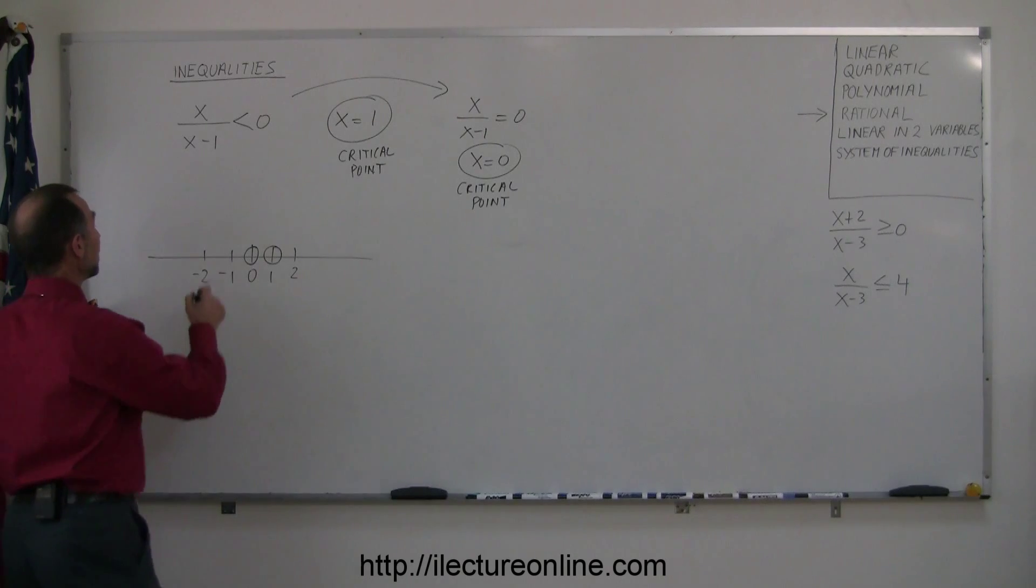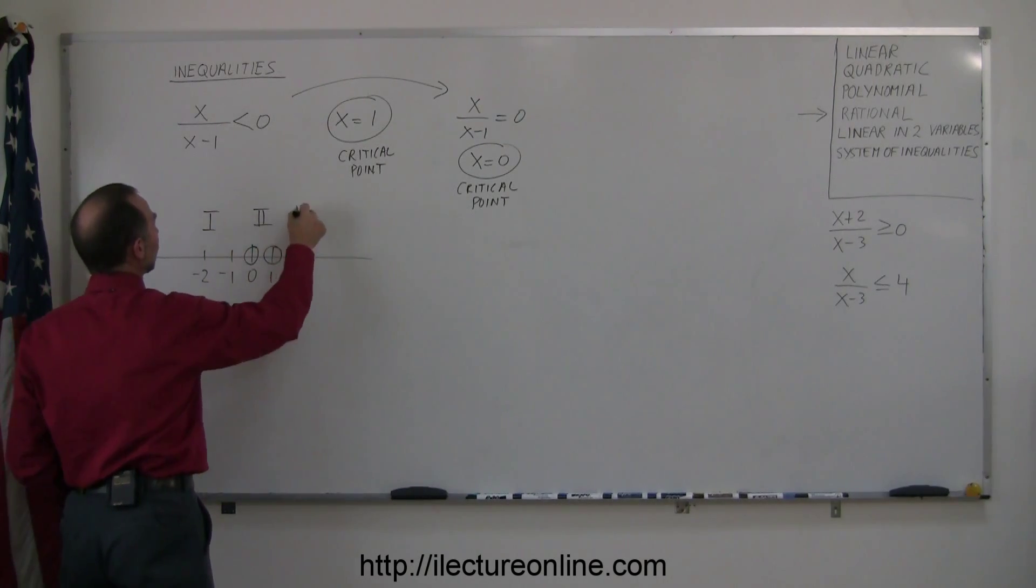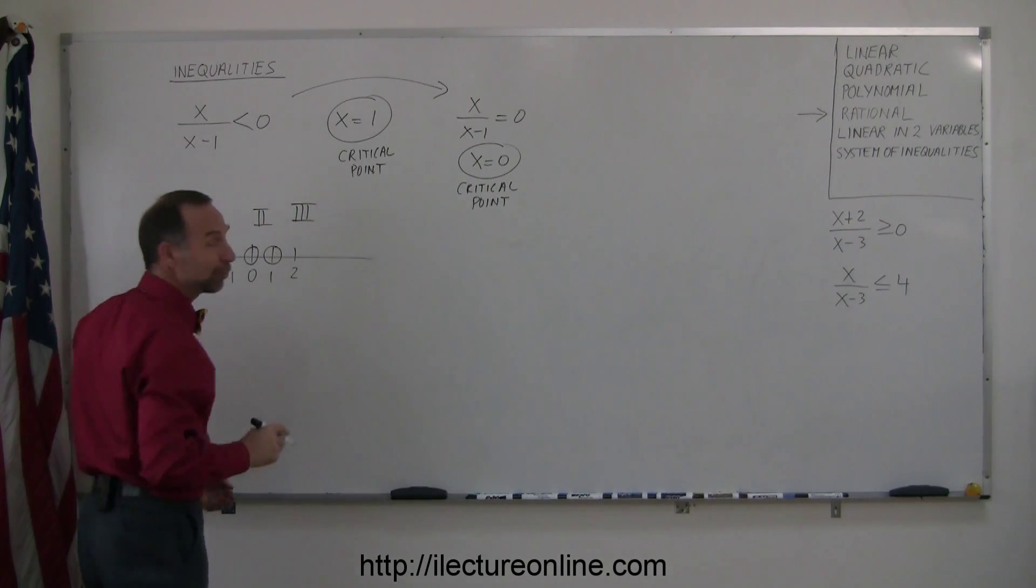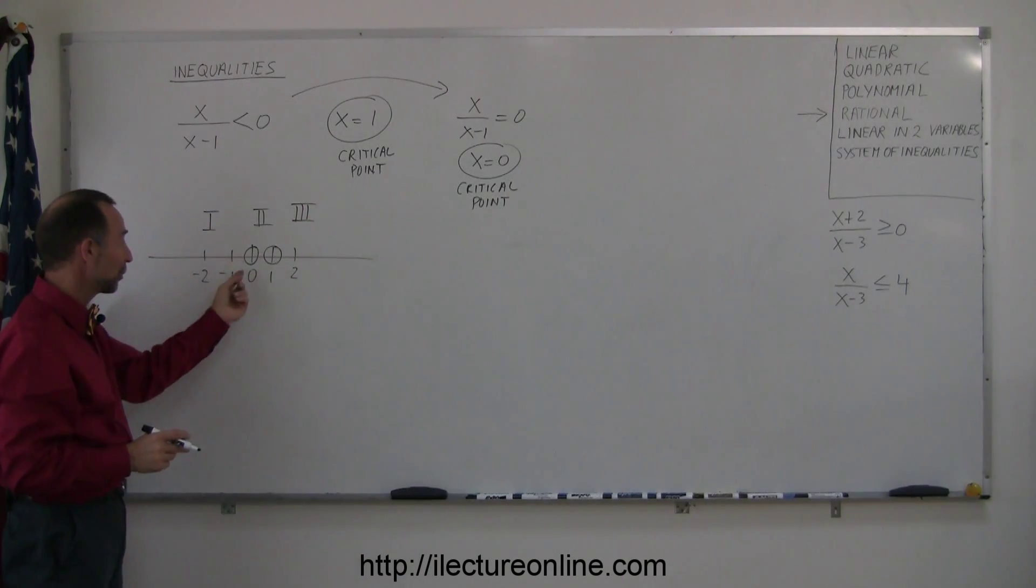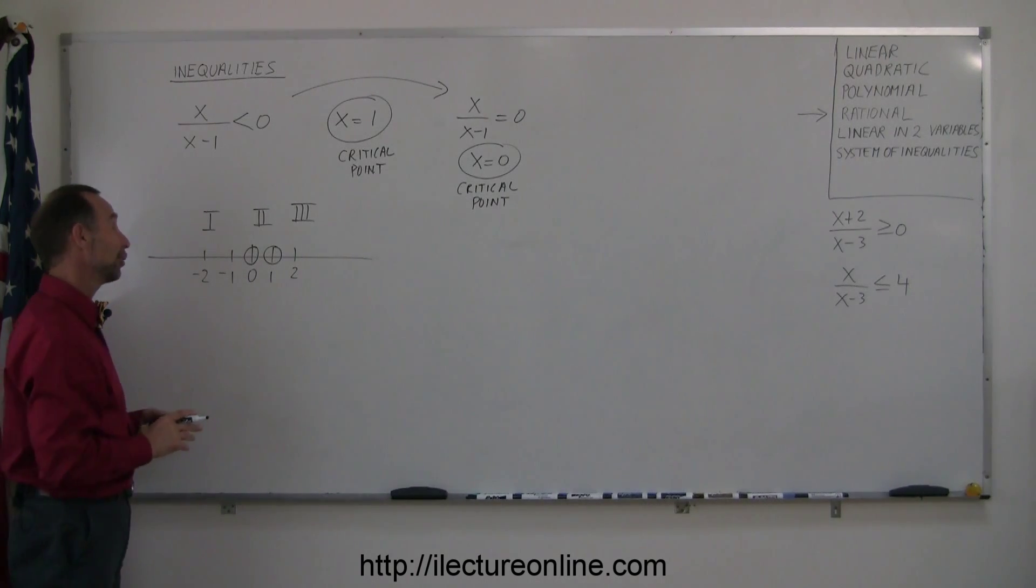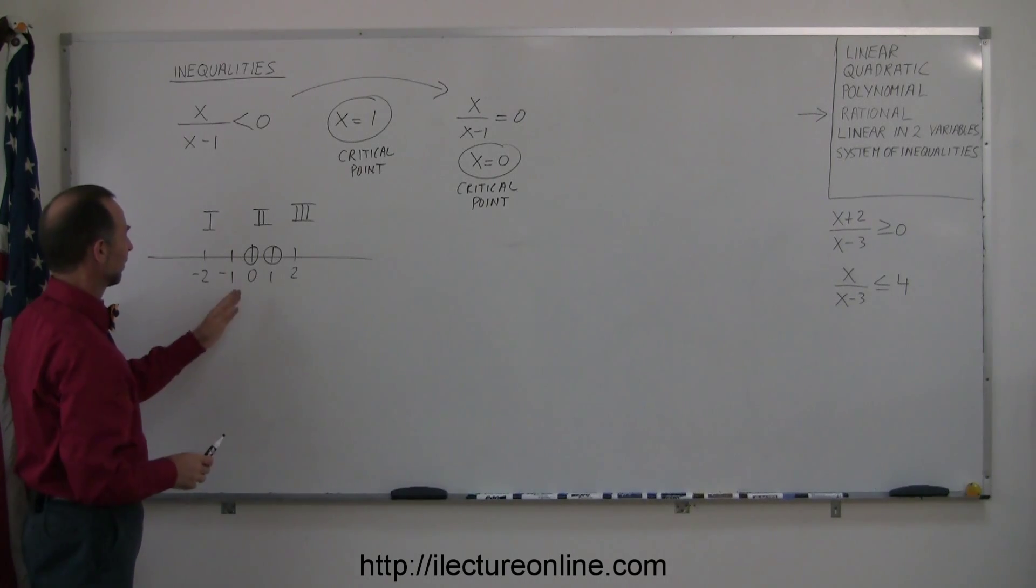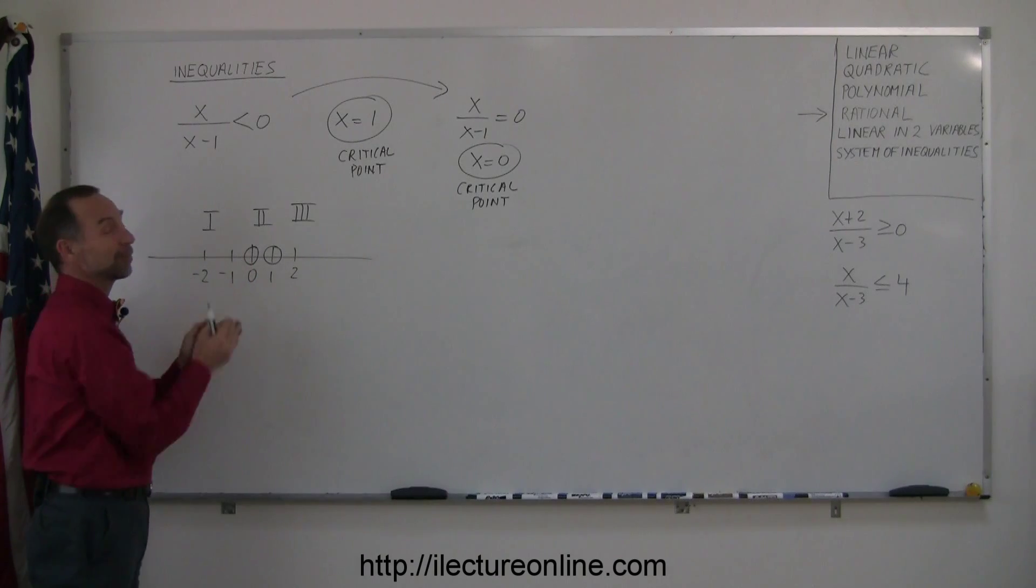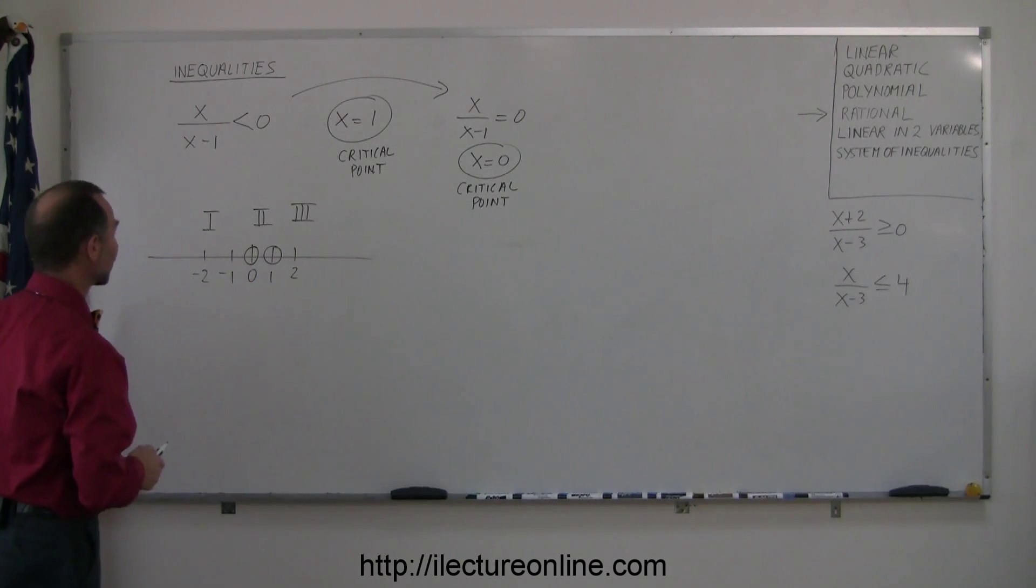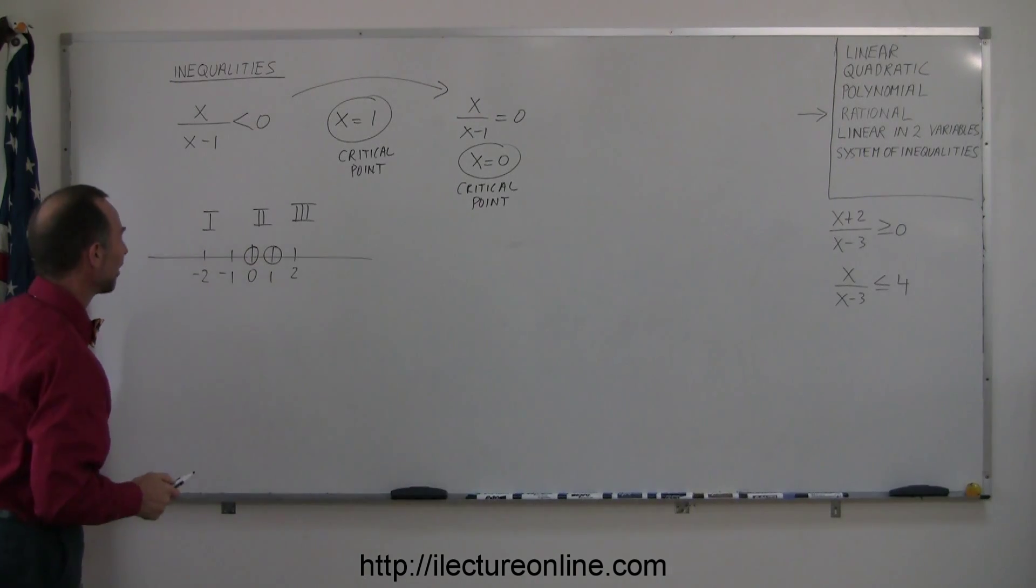All right, that means I now have three regions. Region number 1, region number 2, and region number 3. You can see region number 2 is not very big. It's just all the numbers between 0 and 1. Even though it's not very big, it still includes an infinite number of numbers. It's kind of weird, isn't it? Between 0 and 1 on the number line, you can put in an infinite number of numbers, even though it's not a very big region. So don't diminish its importance even though it's not very wide.